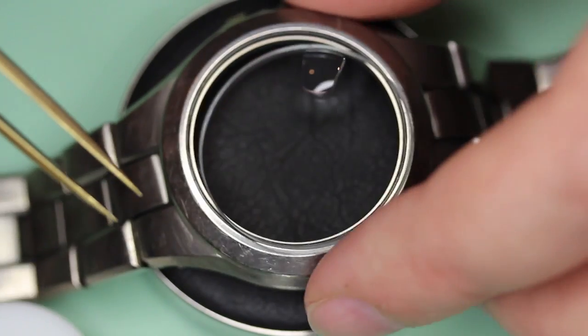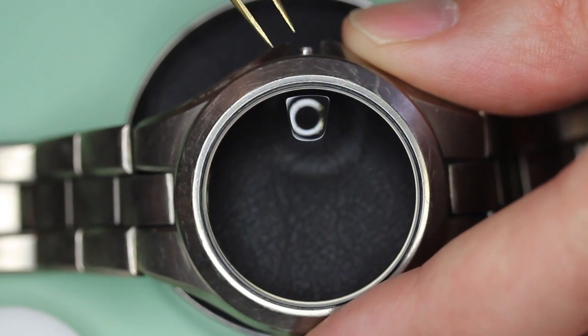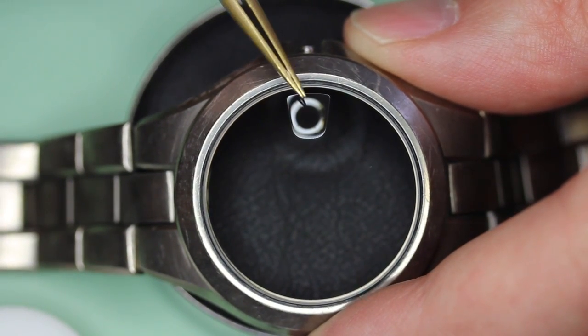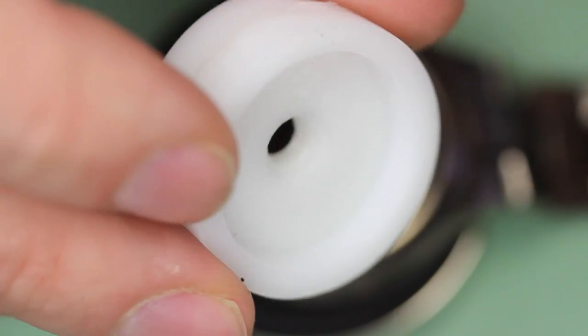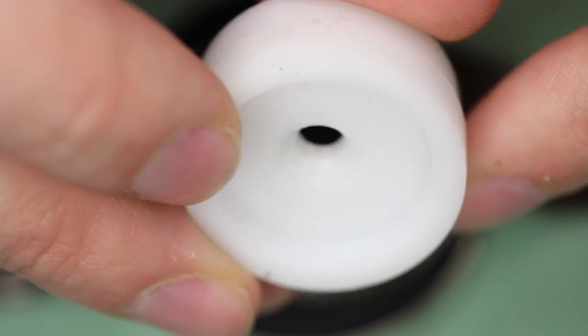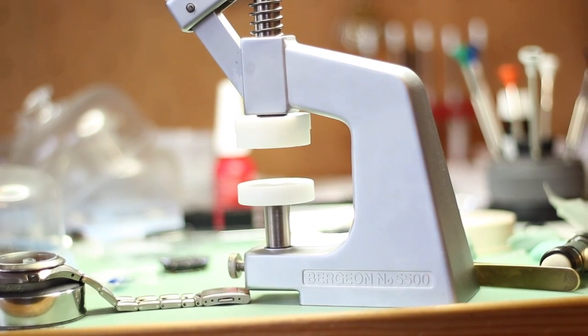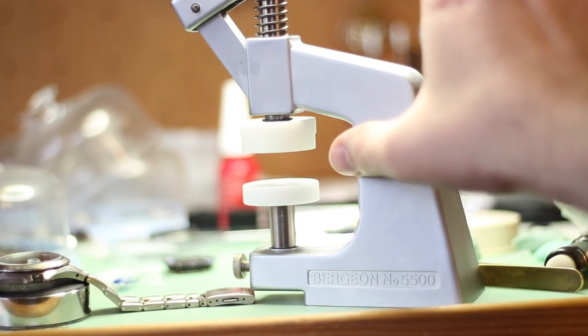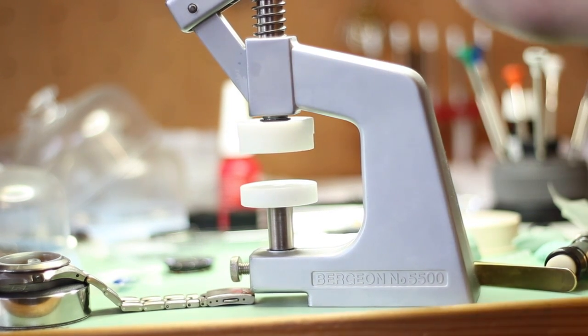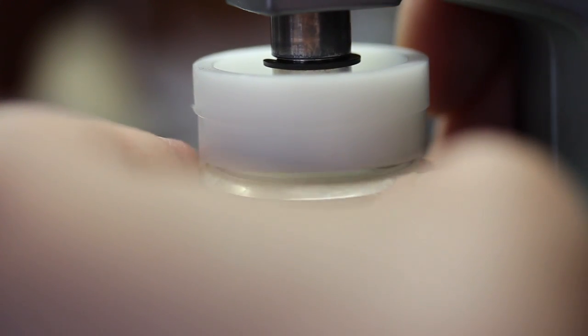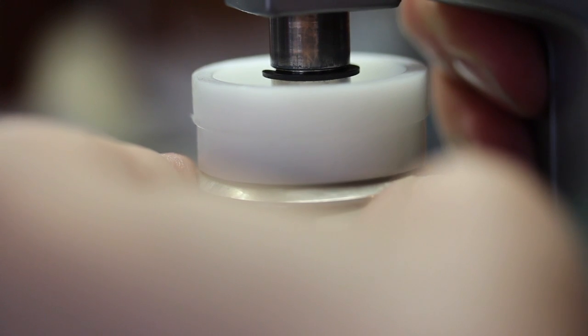This model has a magnifier which resides over the calendar, so line that up. Now we'll choose a recessed die to press the glass in. This is the glass press I'm using. I've placed the correct size die in the press, and I'll push down—not too much pressure, but just enough to press the glass into place. I'm using a recessed die because of the calendar magnifier.